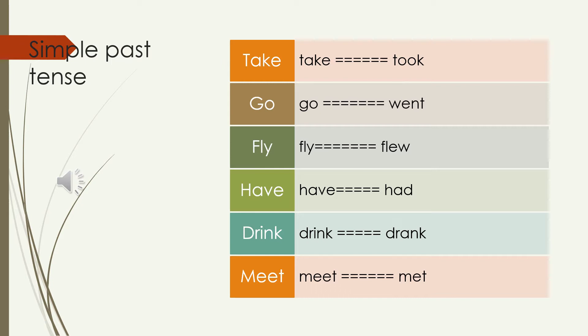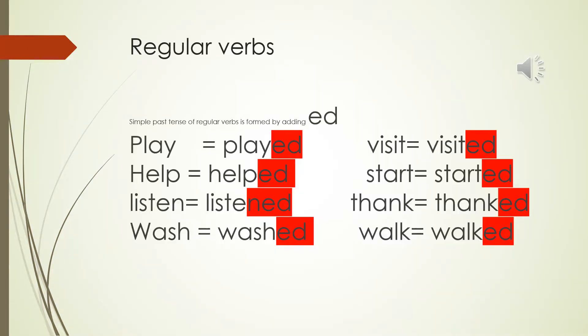Today we want to continue and learn more, expanding further on the simple past tense in English. Most past tense verbs in English are formed by adding ED to the end of the present verb. For example, the word 'play' - if you add ED it becomes 'played'.